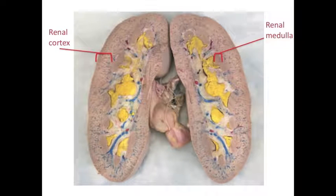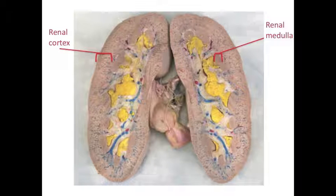This kidney has been injected with three different synthetic materials. The red material represents arterial blood flow, the blue material represents venous blood flow, whereas the yellow material represents the filtrate.